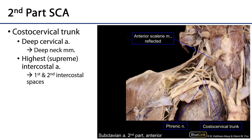This image has the anterior scalene reflected, which reveals the costocervical trunk — 'costo' meaning rib, 'cervical' meaning neck. There are two branches to this trunk. The first is the deep cervical artery, which serves the deep neck muscles. The second, not visible here, is the highest intercostal artery, sometimes called the supreme intercostal artery. It gives rise to the anterior first and second intercostal arteries to serve the spaces between the first, second, and third ribs.